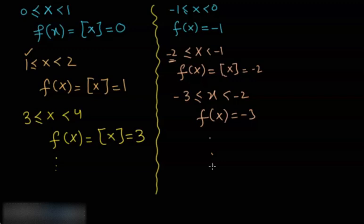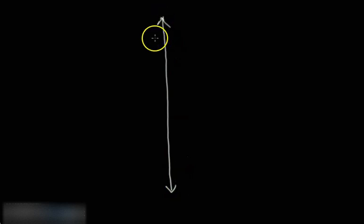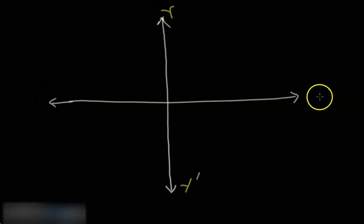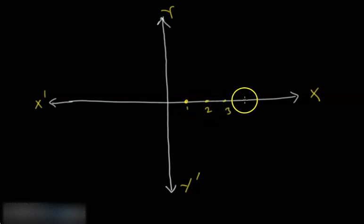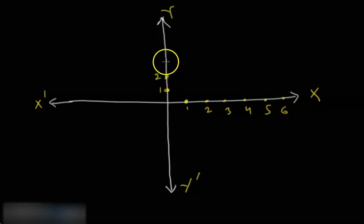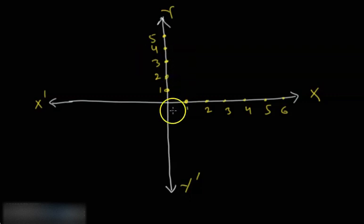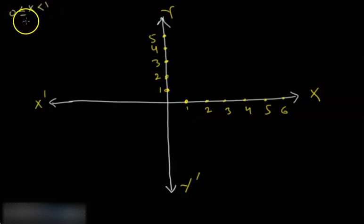Now let's plot these values on a graph. This is my y-axis and this is my x-axis, with positive and negative directions. Let's mark 1, 2, 3, 4, 5, 6 on both axes. Recalling our pattern: when x is between 0 and 1, the function equals 0, so on this interval the value of the function is 0.